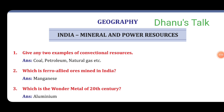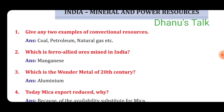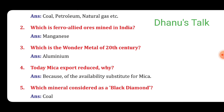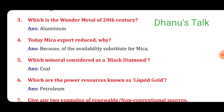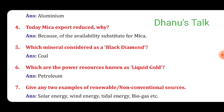From Geography, Chapter: India Mineral and Power Resources. Question No. 1: Give any two examples of conventional resources. Answer: Coal, Petroleum, Natural Gas, etc. Second: Which is a ferro-alloyed ore mined in India? Answer: Manganese. Third: Which is the wonder metal of the 20th century? Answer: Aluminium. Fourth: Why has mica export reduced today? Answer: Because of the availability of substitutes for mica. Question No. 5: Which mineral is considered a black diamond? Answer: Coal. Sixth: Which power resource is known as liquid gold? Answer: Petroleum. Seventh: Give any two examples of renewable non-conventional sources. Answer: Solar Energy, Wind Energy, Tidal Energy, and Biogas, etc.